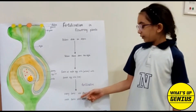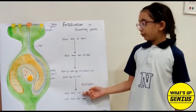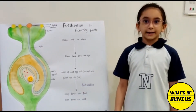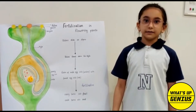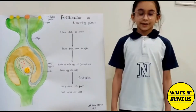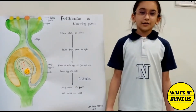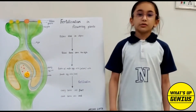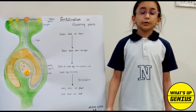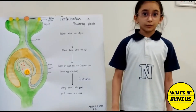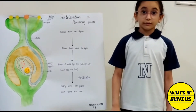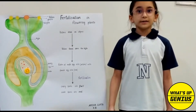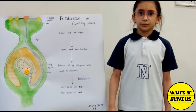The ovary turns into a fruit which protects the seed. In fruits like avocado, there is only one ovule inside the ovary, so there is only one seed inside the fruit.